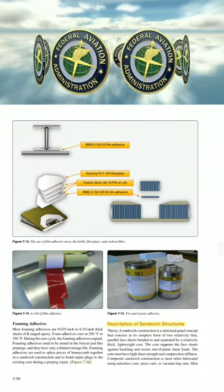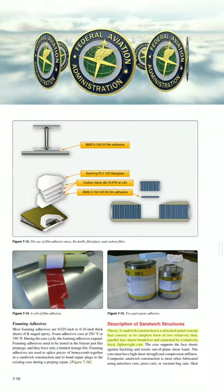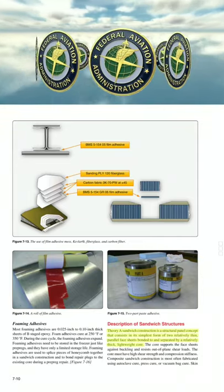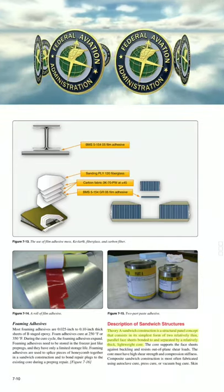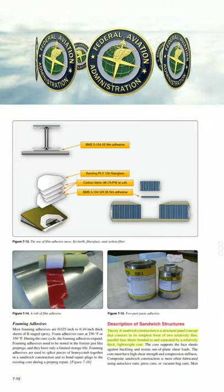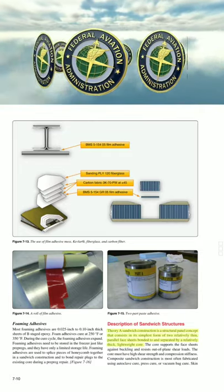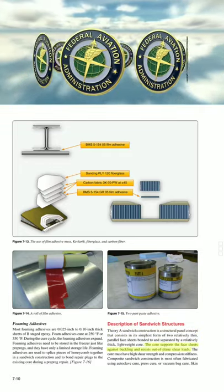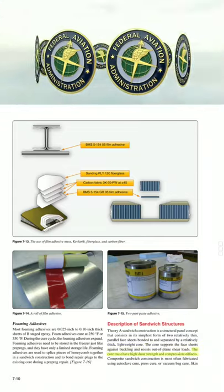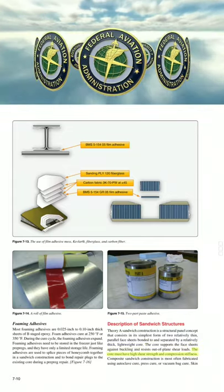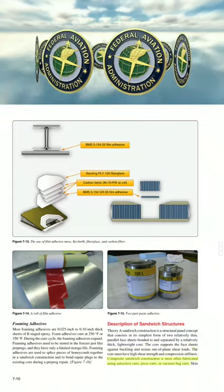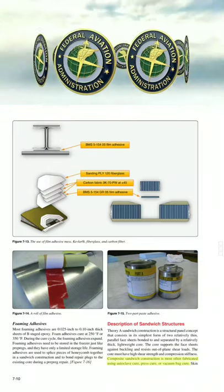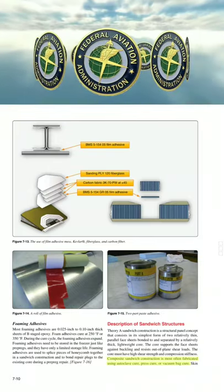Description of sandwich structures. A sandwich construction is a structural panel concept consisting in its simplest form of two relatively thin parallel face sheets bonded to and separated by a relatively thick, lightweight core. The core supports the face sheets against buckling and resists out-of-plane shear loads. The core must have high shear strength and compression stiffness. Composite sandwich construction is most often fabricated using autoclave cure, press cure, or vacuum bag cure.